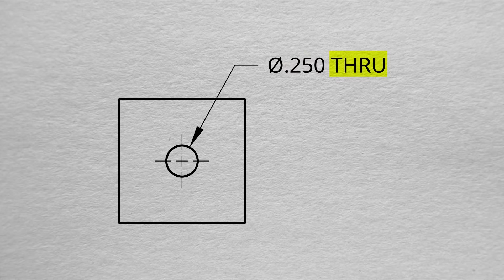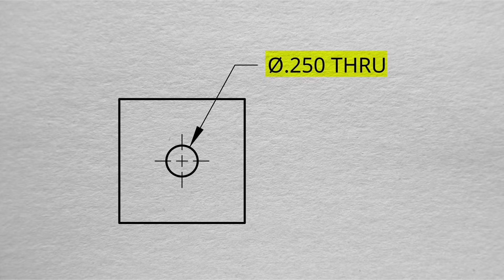On this example, we have a through hole. It tells us it's through because it literally spells it out. So we can tell exactly what that hole is, that it goes to the entire piece, and that it is a quarter inch diameter hole.